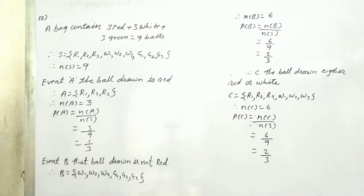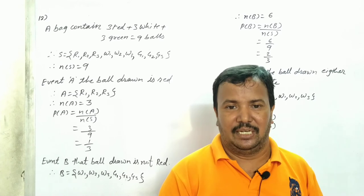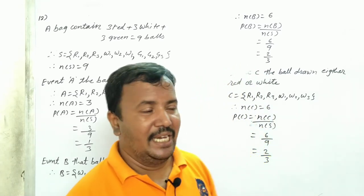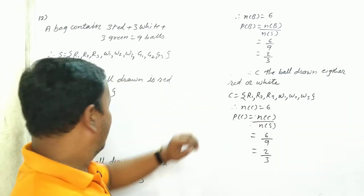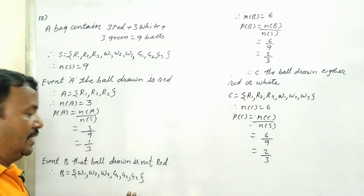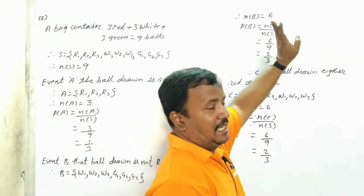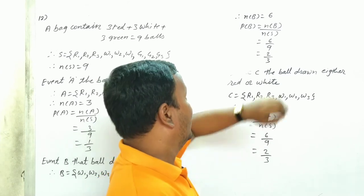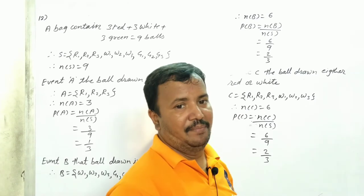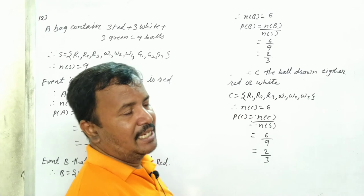Event B: the ball drawn is not red. There are 3 colors — white, green, and red. The ball should not be red, so it can be white or green. B is equal to {W1, W2, W3, G1, G2, G3}. Number of B is equal to 6. Probability of B is equal to 6 upon 9, which simplifies to 2 upon 3.